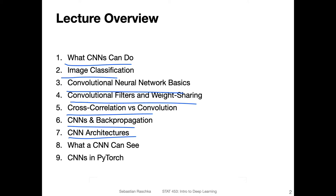Then I will briefly outline what types of convolutional neural network architectures are out there, though this will mainly be a topic for next week. And then we'll briefly see what CNNs can see — looking a little behind the curtain at what information the CNN looks at and how it processes that information. And lastly, we will see how we can use convolutional networks in PyTorch, which is actually not too complicated, so don't worry — it will be a rather short video.